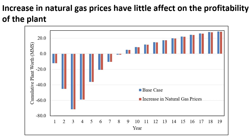An increase in natural gas prices has little effect on the profitability of the plant. The price of natural gas was increased until the ATROR equaled 15%, which in turn increased the price of other utilities. This caused very little change in the plant's economics: the cumulative plant net worth only decreased by $0.3 million and the plant was paid off at the same time as the base case. This is because the fuel credit received from the combustion of waste streams is directly based on the price of natural gas, so when natural gas prices increase, the fuel credit's value also increases. The plant is recommended to be built even if natural gas prices are expected to increase.